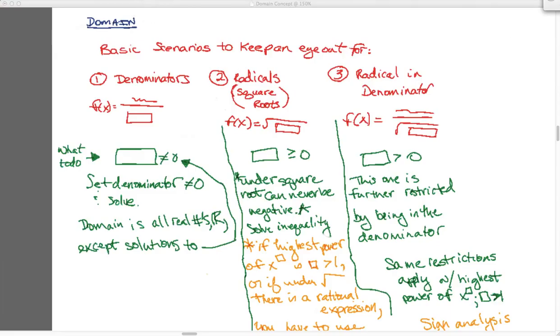that denominator can never equal zero. If you have a number over zero, it basically becomes something we refer to as undefined. And what you want to do is you basically want to take whatever you have down here in this denominator